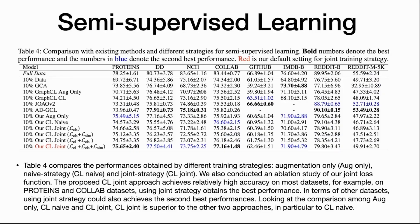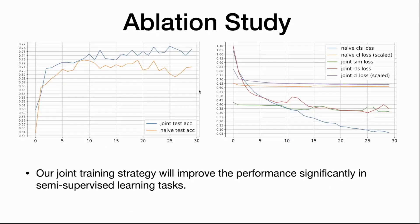Finally, for semi-supervised learning, we compared with current state-of-the-art methods and also performed an ablation study of our joint training strategy with different loss combinations. It shows that combining all loss functions together is the most effective approach. We achieved two best and three second-best performances. The chart also demonstrates that the joint training strategy behaves much better than the naive training strategy on semi-supervised learning tasks.